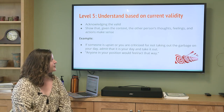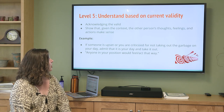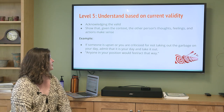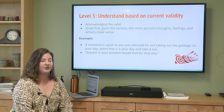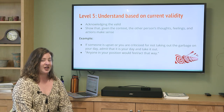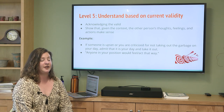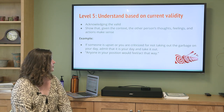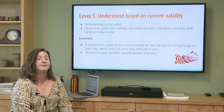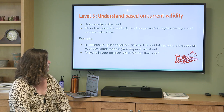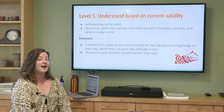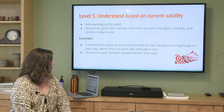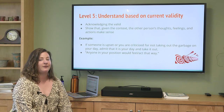Level five is understanding based on current validity. We want to acknowledge what's valid and show that given the context, the other person's thoughts, feelings, and actions make sense. For example: 'Wow, your teacher yelled at you in front of the entire classroom and then didn't check in with you afterwards — that must have felt awful and embarrassing.' We want to really recognize their experience based on the context of the situation. A phrase we might use is: 'Anyone in your position would feel that way — this makes sense to me.'